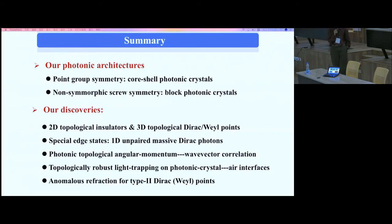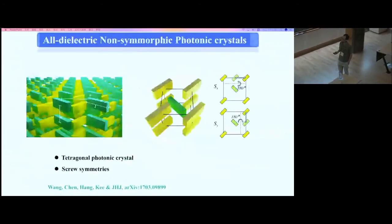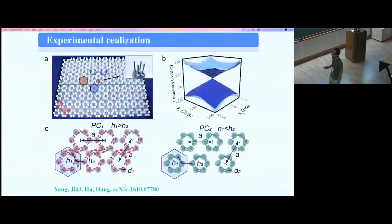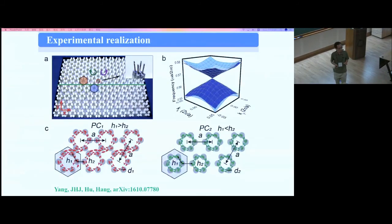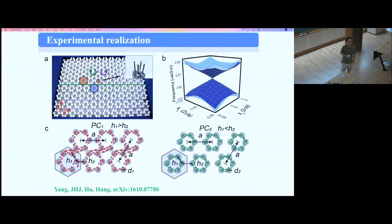Q: What is the typical size in number of unit cells in the experimental systems? A: For the microwave frequency experiment, the lattice constant is about one centimeter, and the effective sample size is on the order of 10×10 unit cells. You don't need very large samples.